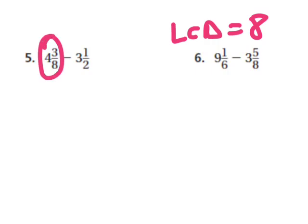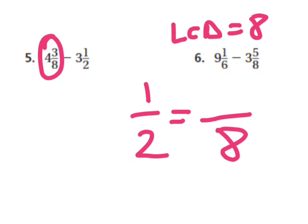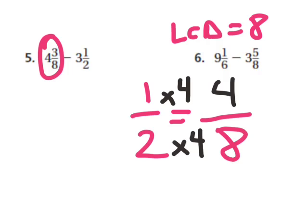Three eighths already has an eight in the denominator, so I don't have to change that fraction. But I do need to change the one half — that's a two in the denominator, so I'm going to put an eight there. If I multiplied two times four I would get eight, so I have to multiply the top times four. One times four is four, so one half is the equivalent of four eighths. I'm changing this to four eighths, giving me three and four eighths.